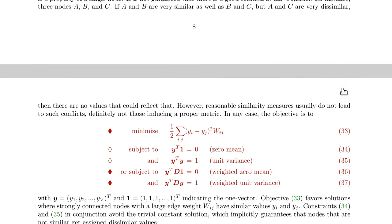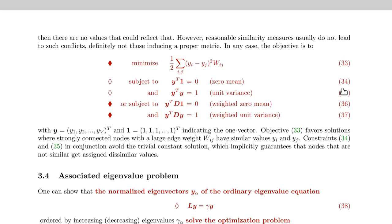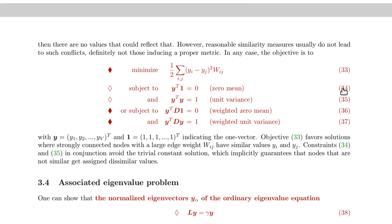The objective is to minimize the squared difference between the values of the nodes. We have node i and node j here. We take the difference and then we square it, weighted by w_ij. So in general, you want to have similar values if two nodes are connected by a strong weight.